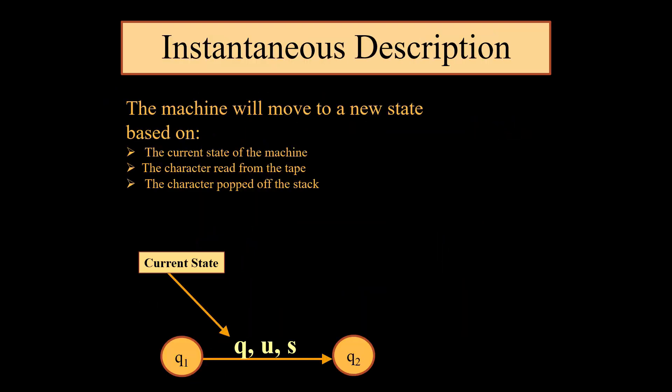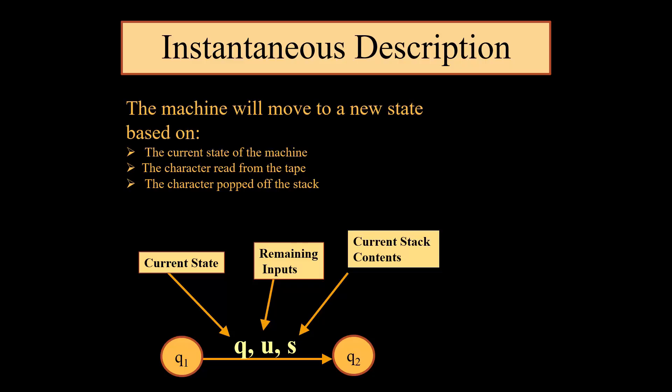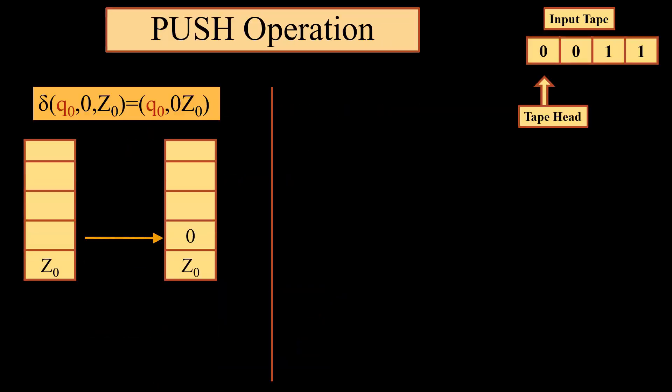For a transition from q1 to q2, we have three inputs: the current state represented by q, u represents the remaining inputs, and s represents the current stack contents. For a push operation represented by q0 with 0 as input and z0 as the last element of the stack, the result leads to q0, 0, z0, meaning a push operation is performed and 0 is pushed onto the stack.